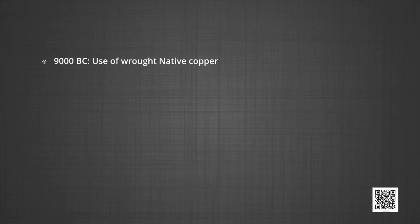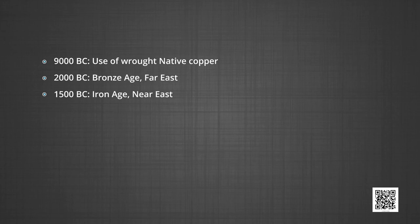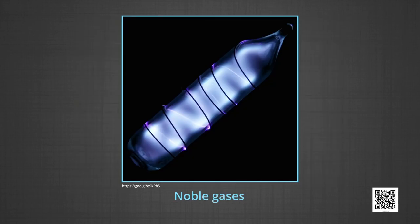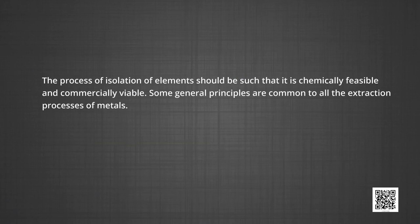As early as 9000 BC, the use of wrought native copper. In 2000 BC, Bronze Age in the Far East. 1500 BC, Iron Age near East, and in 1826, zinc extraction in France. A few elements like carbon, sulphur, gold and noble gases occur in free state while others in combined forms in the earth's crust. The extraction and isolation of an element from its combined form involves various principles of chemistry. The processes of isolation of elements should be chemically feasible and commercially viable.